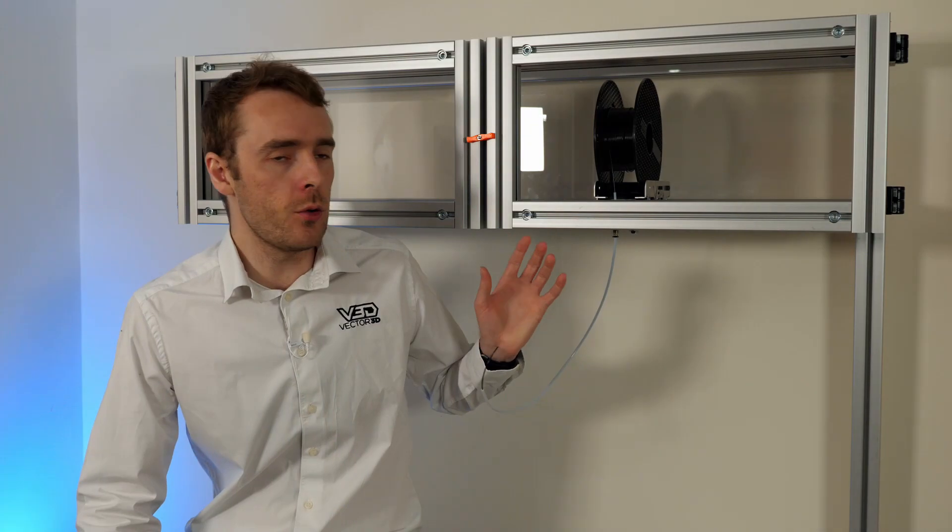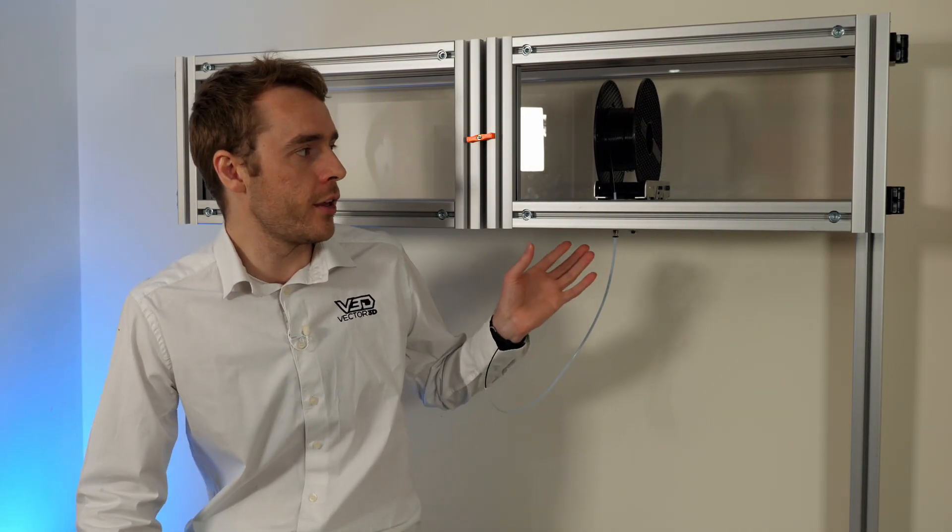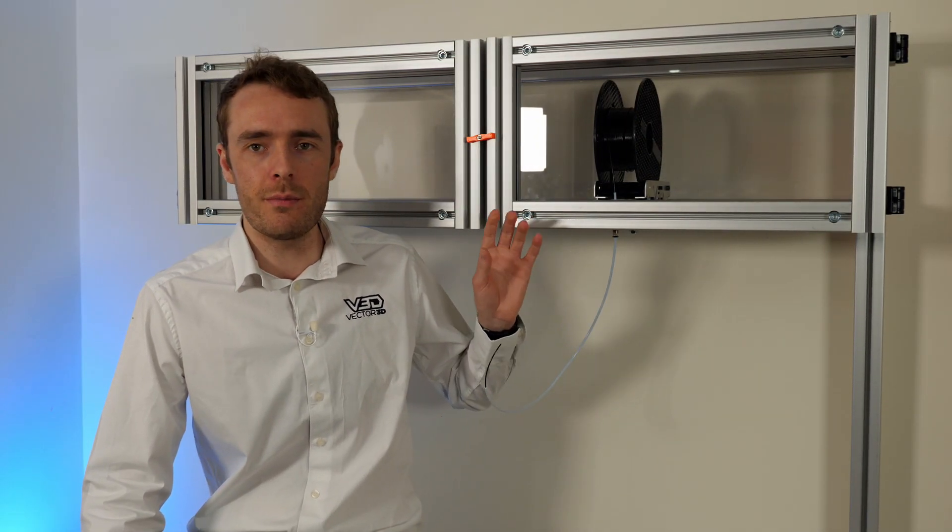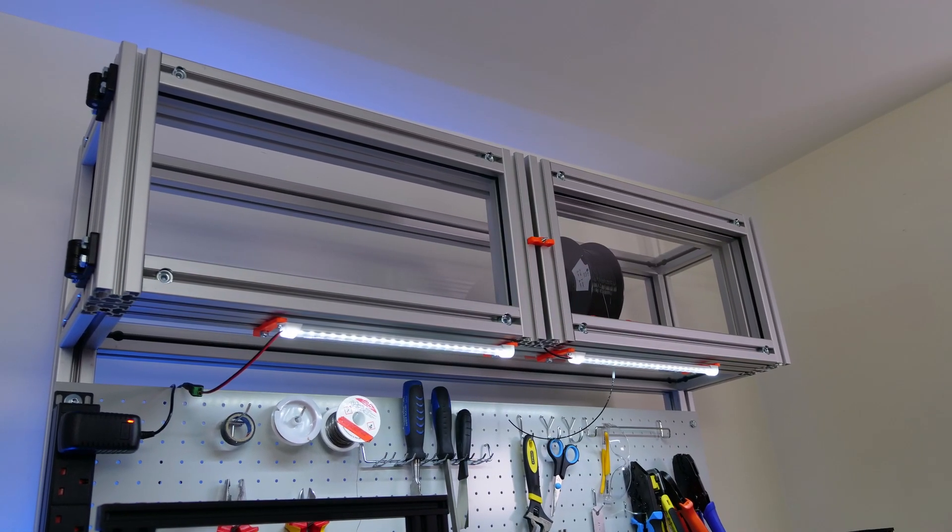The frame structure for the enclosure uses exactly the same extrusion as the rest of the frame at the moment. However because it is quite thick and large designed for a large robust frame it is a little bit overkill for the enclosure and overall this makes the top of the workbench quite heavy. There's quite a lot of extrusion that goes into this top assembly.